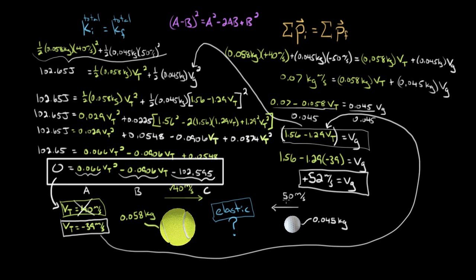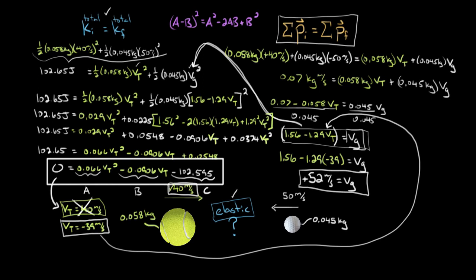To recap: given initial velocities and masses, we used conservation of momentum, which gave one equation with two unknowns. Being told the collision is elastic meant total kinetic energy is conserved, giving a second equation. We solved the momentum equation for VG, substituted into the KE equation, and got a quadratic. The quadratic formula gave two roots — one matching initial velocity (no collision) was discarded — giving us the final velocities of both objects.